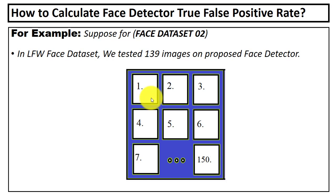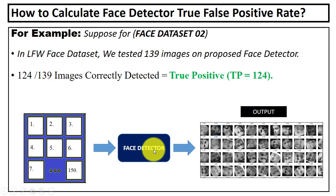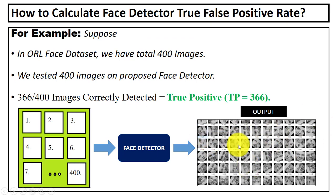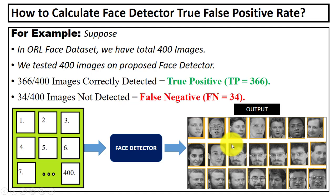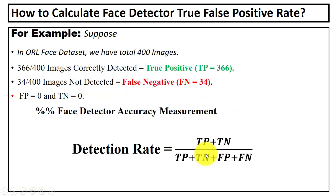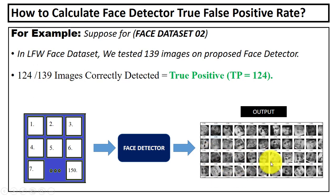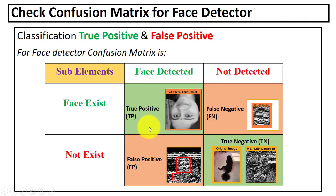After that, we tested the proposed face detector on another dataset — the LFW face dataset — on 139 digital images. Out of 139, 124 digital images are correctly detected, so the value for TP is 124. You can see the output here: rotated digital images at different angles with faces detected. These are the images that are not detected by the face detector.